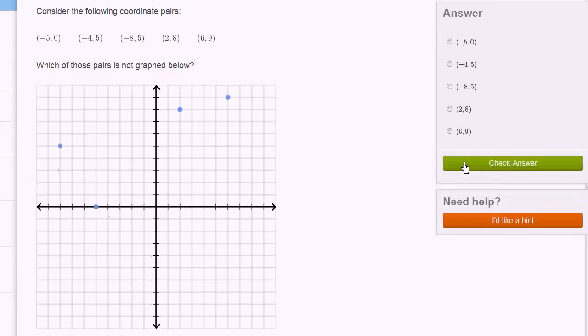So let's do a couple more of these. So is negative 5, 0 graphed? Yep, it's right over there. Negative 4, positive 5 should be there, so that's not graphed. So we'll just select that one.